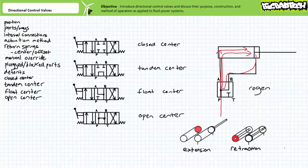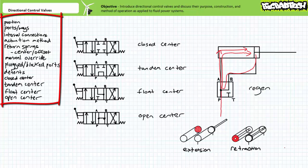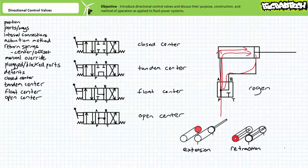Rather than introducing more confusing examples, the key takeaways for identifying any directional control valve are: positions, ways, actuation method, which deactivated position is asserted by return springs offsetting or centering the valve, and whether or not the valve has any modifiers like manual overrides or detents. Most configurations encountered are variations on these common themes.